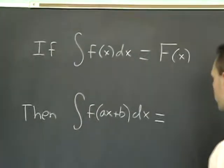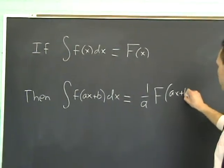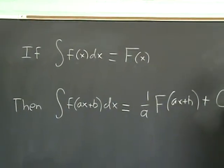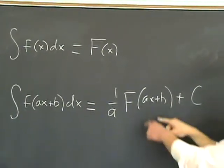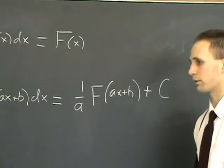The final answer is going to be 1 over a times big F of ax plus b plus a constant. You just operate the anti-derivative with the original argument in there, and you just have to divide by the factor of a.